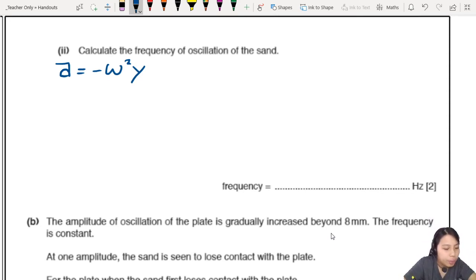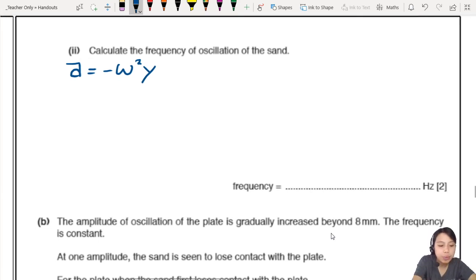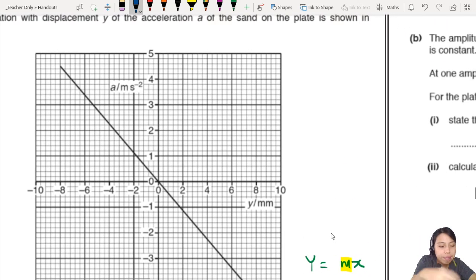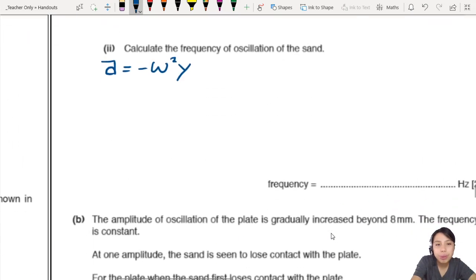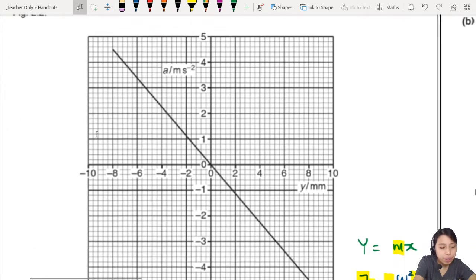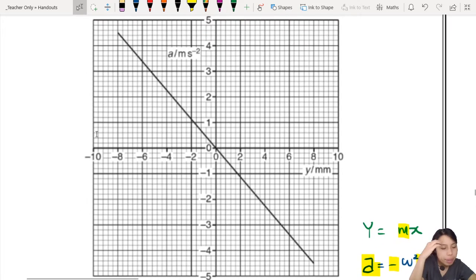Now, how do we know what the acceleration is? Can we read from the graph? Can we pick any point? I guess we can. Just pick here. We want to find angular frequency, right? So we will expand this part a little bit. Angular frequency is 2 pi f. f is what we're looking for. So now we have to choose a point on the graph. You can choose any point you want, I guess.